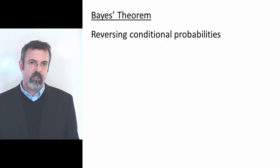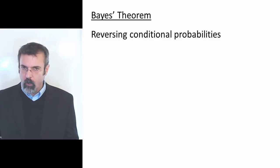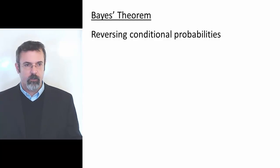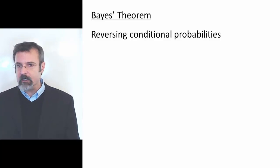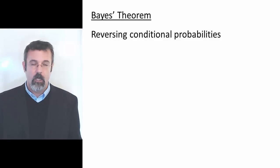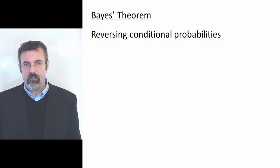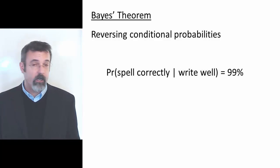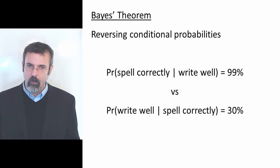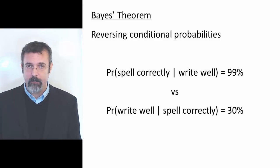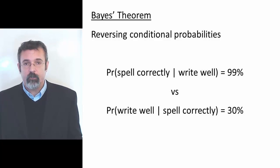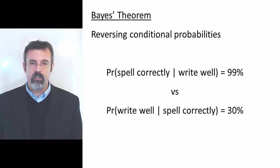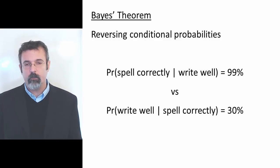Bayes' Theorem is a formula for reversing conditional probabilities. Recall that conditional probabilities are not symmetric — the probability of A given B is not the same as the probability of B given A. For example, the probability that someone can spell correctly given that they can write well is likely quite high. But the probability that someone can write well given that they can spell correctly is not necessarily high. Often when we deal with conditional probabilities we will find the need to reverse the conditionality, and to do that we use Bayes' Theorem.